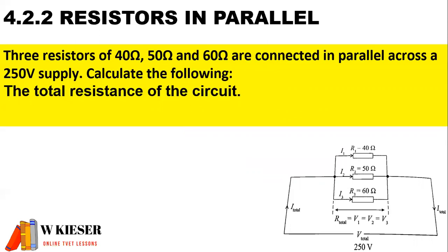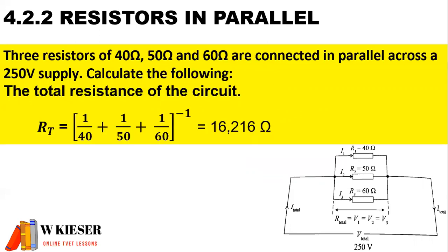To calculate the total resistance of the circuit, inside our big brackets it will be 1 over R1 plus 1 over R2 plus 1 over R3, all to the power of minus 1. We end up with a total resistance across the parallel branch of 16.216 ohms.